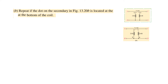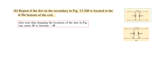Part b of the same problem states that the dot on the secondary is now located at the bottom, whereas initially the dots were at the top. As we discussed, moving the dot causes M to become minus M. So in the formula L1 − M, we now write L1 − (−3.5), giving 5.5. Similarly, all M terms are replaced by −3.5, so minus M is used throughout.